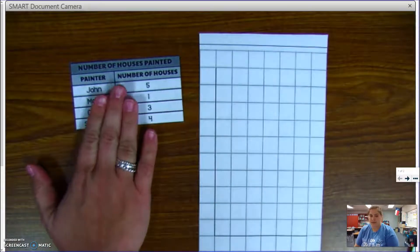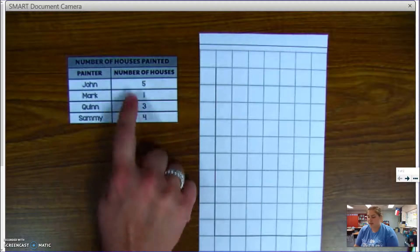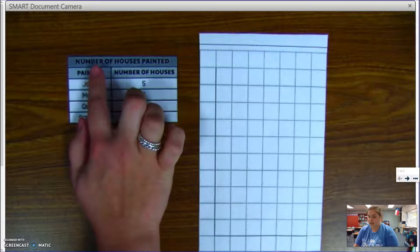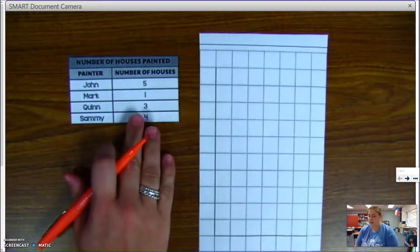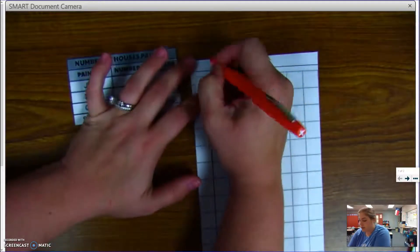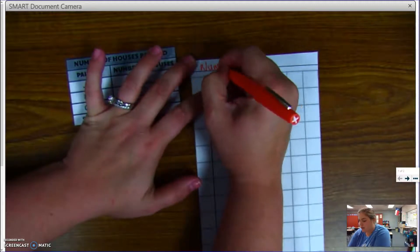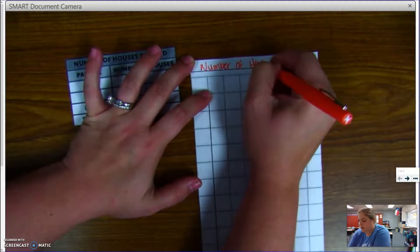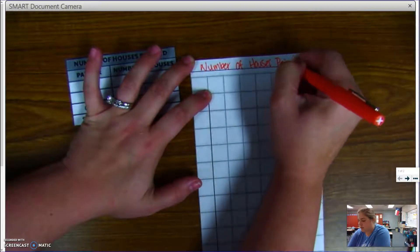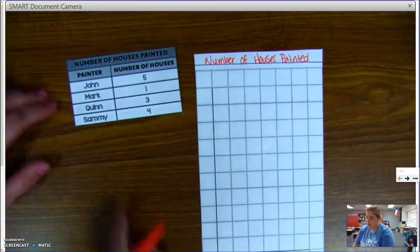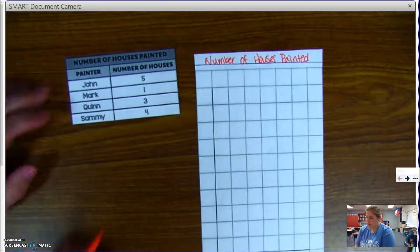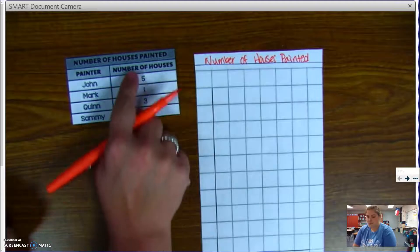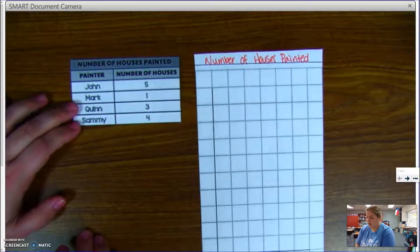So I have another frequency table here, and this time there's no tally marks, there's just numbers, and across the top it says number of houses painted. So I'm going to continue that title for my bar graph, number of houses painted. I have my people as my categories, and then I have here the number of houses that each person painted.